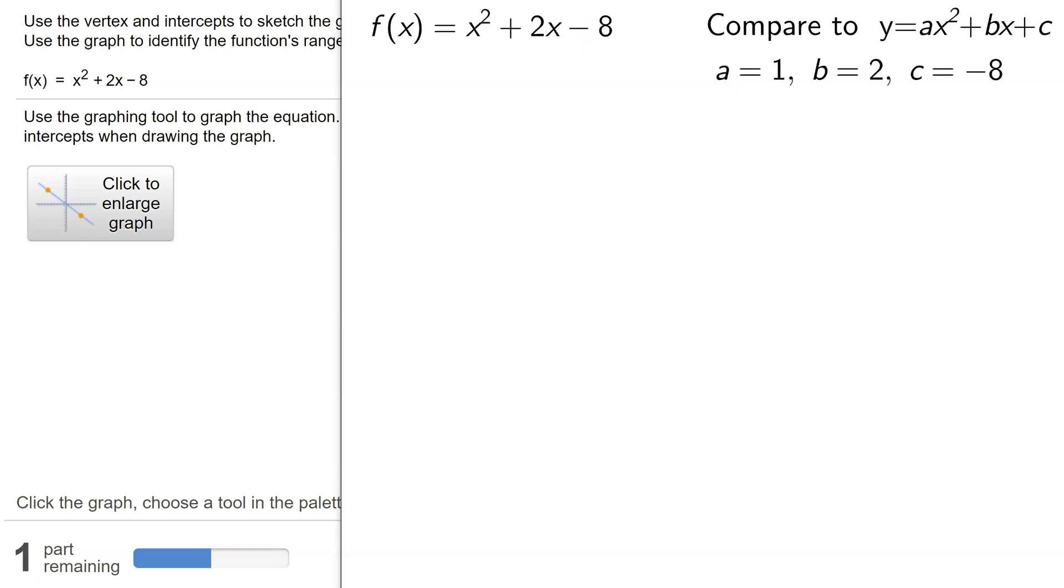To find the vertex, we're going to use the formula x = -b/(2a). b is 2 and a is 1, so plugging those values into the formula, I get -2/2, which is -1. This is the x coordinate of the vertex.